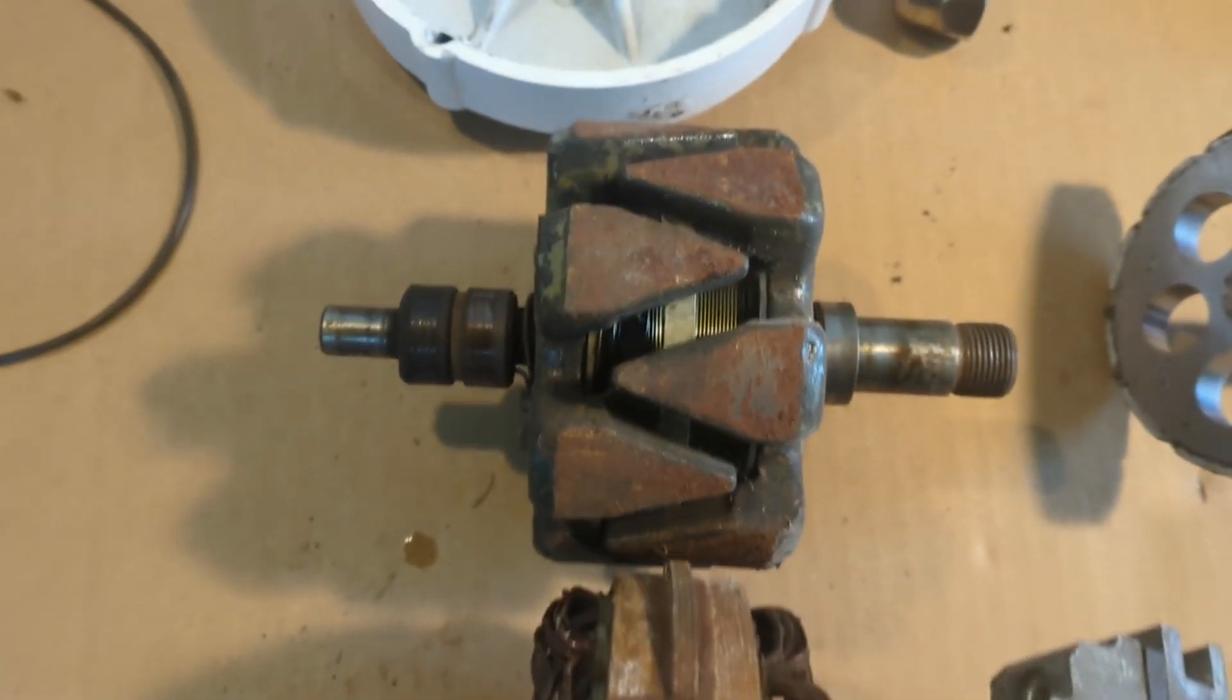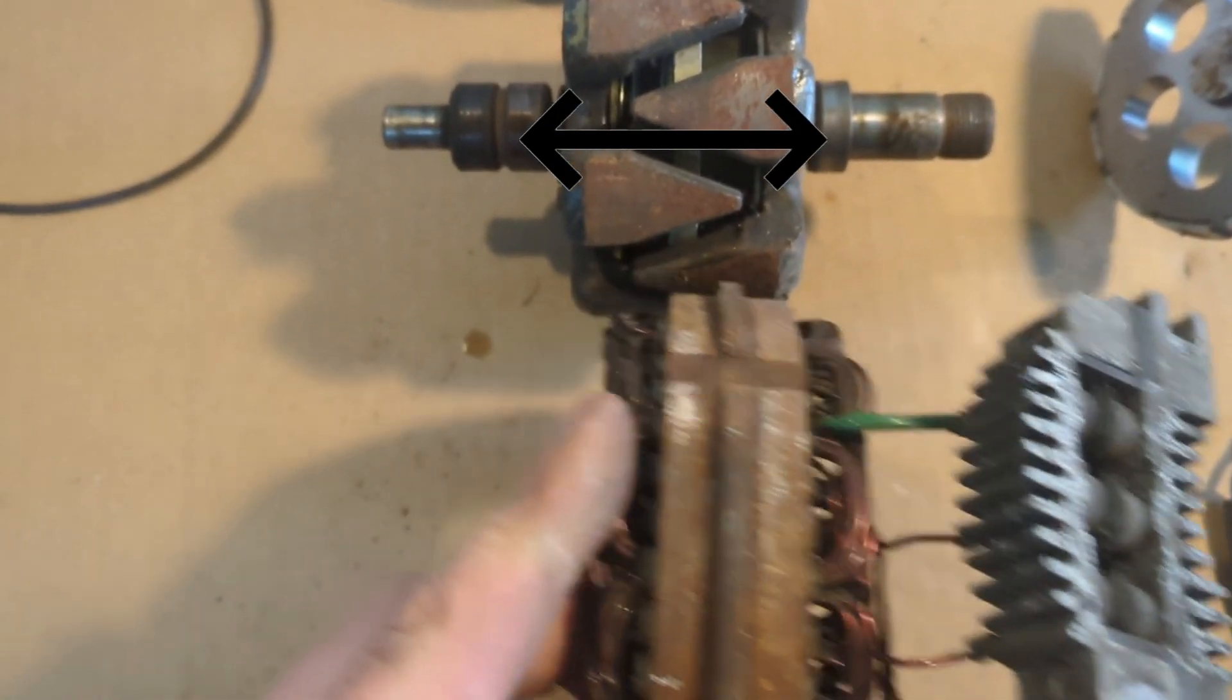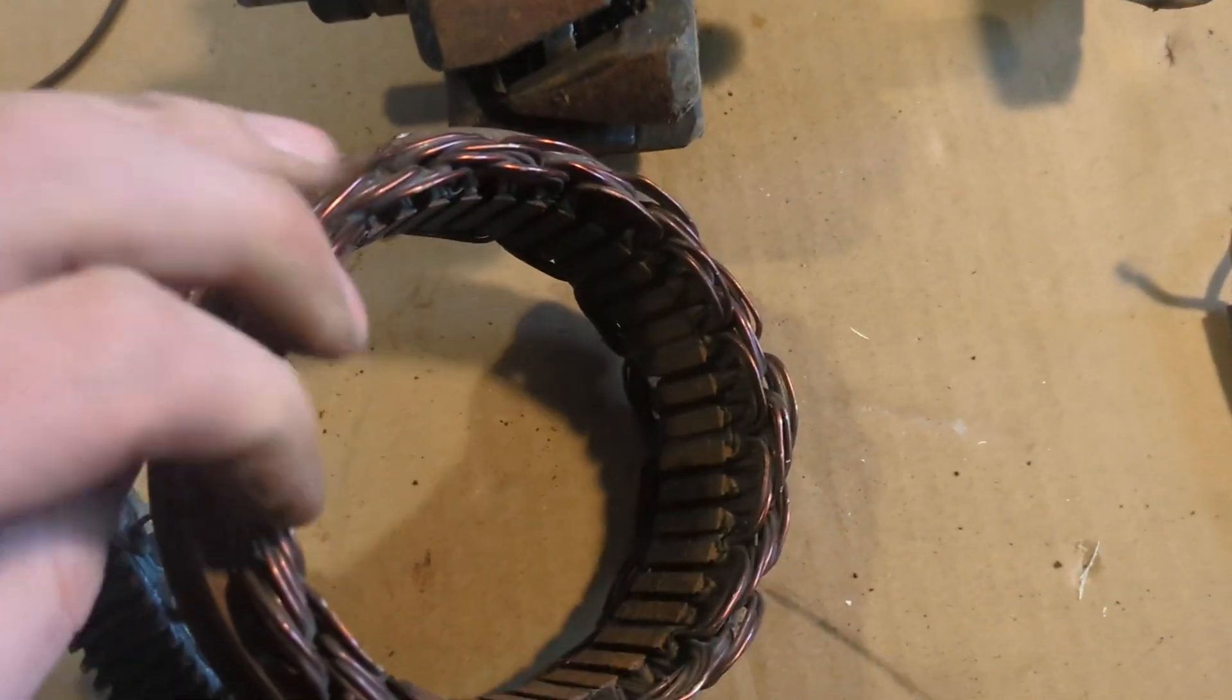Now let's look at the rotor from the car alternator. This one uses electromagnets, but that's not the point. Look how wide the claws are in relation to the coil winding. It's only in these parts of the wire that we can produce electricity.